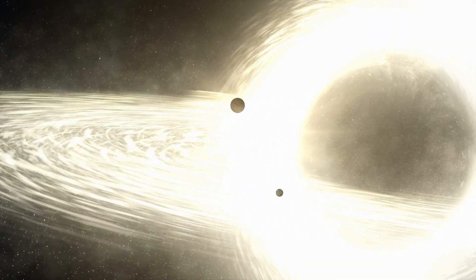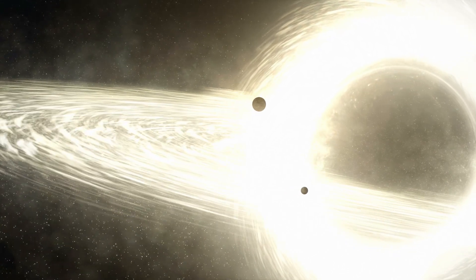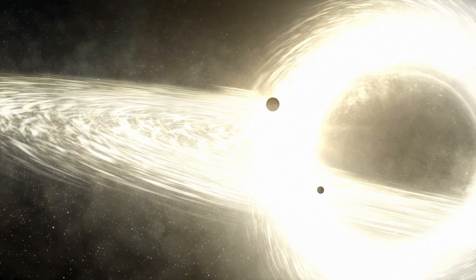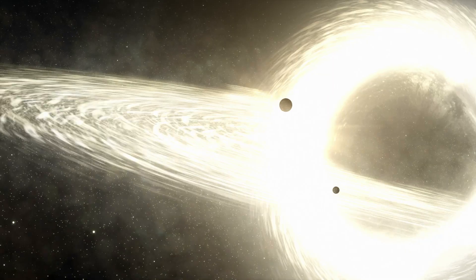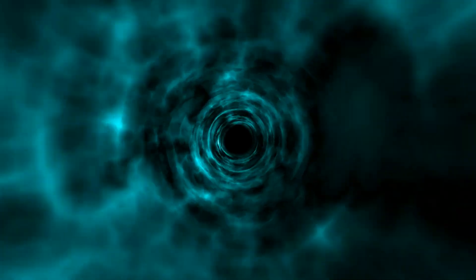How can the information about the material that formed the black hole and fell into it be preserved if it's seemingly lost in the radiation? With this foundation in place, I feel that we're now ready to explore the paradox itself and the various theories proposed to resolve it.